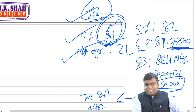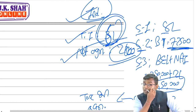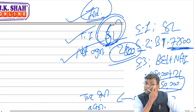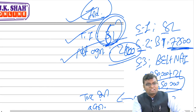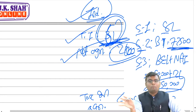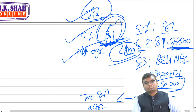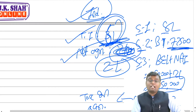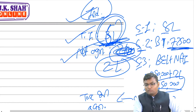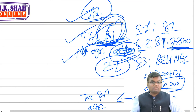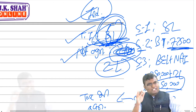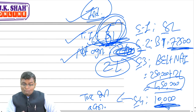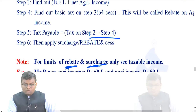If net agricultural income had been only ₹2,000, partial merger would not apply because agricultural income is not more than ₹5,000 — you would directly calculate tax on ₹6 lakh with no partial merger. Similarly, if agricultural income is ₹2 lakh but the assessee is a partnership firm, partial merger still does not apply — you calculate tax only on ₹6 lakh.